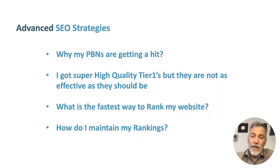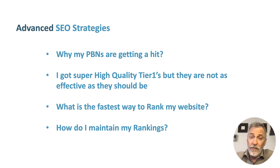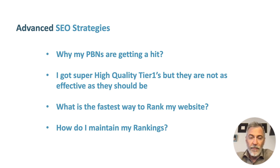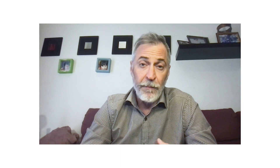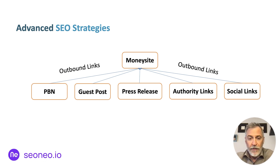Over the years I get a lot of questions like: why are my PBNs getting hit, or I got super high quality tier ones but they are not as effective as they should be, or what is the fastest way to rank my website, or how do I maintain my rankings? The answer is quite simple — what most SEOs are doing all over the world is using super high quality tier ones for their money site in the form of PBN, guest post, press release, or authority links.